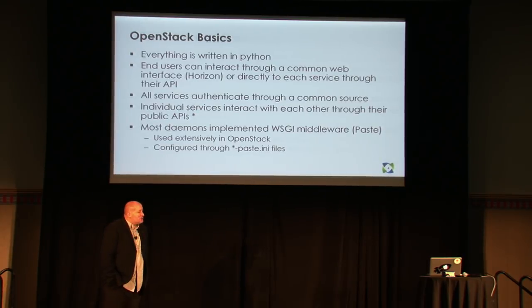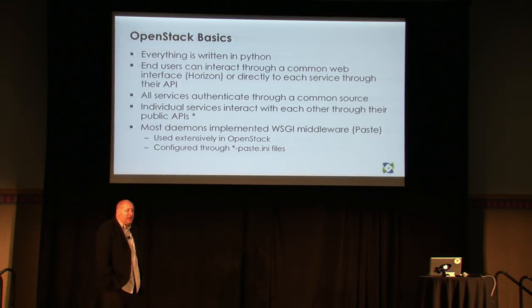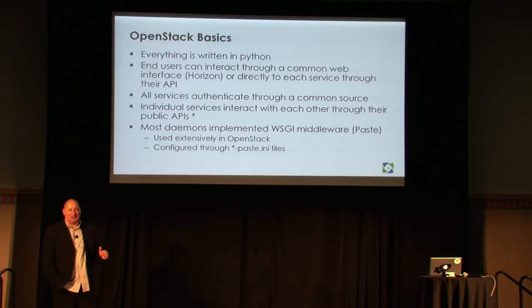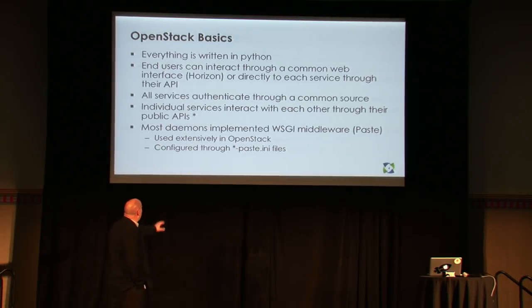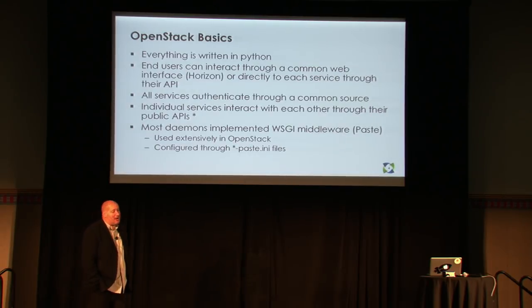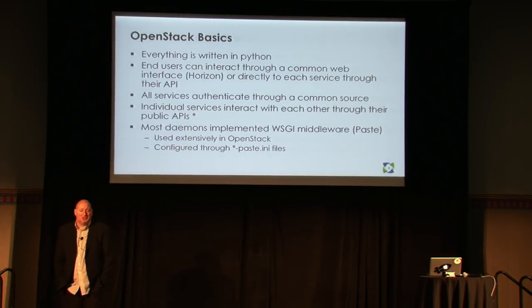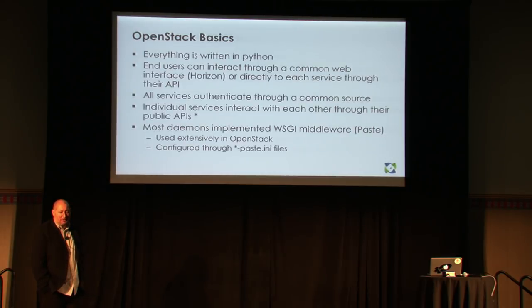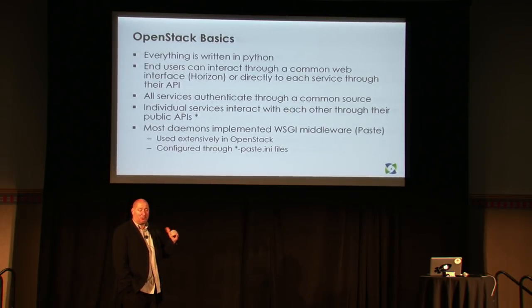End users interact with either the common web interface — the dashboard — or the APIs. Every service has an API. There are no private calls; everything is done through REST APIs. All services can authenticate through a common source, which is the identity service. All services try to interact with each other through APIs also. This is helpful when debugging: if you have a problem between two services, you can go in and try to replicate the calls to debug that.